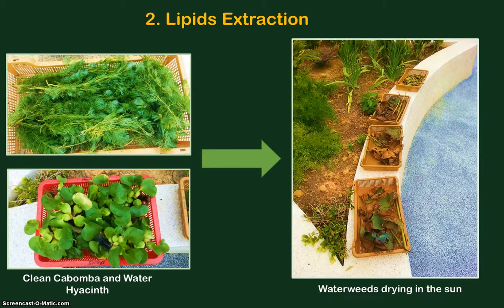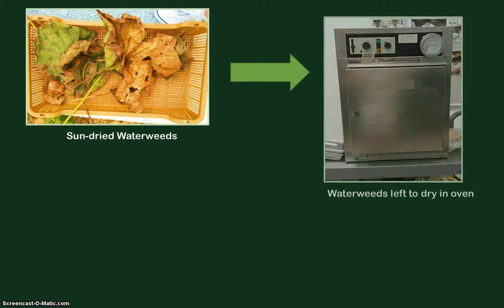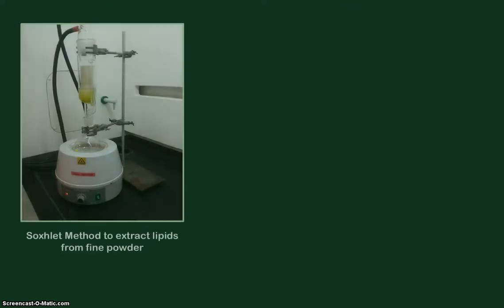The dried weeds are then placed in the oven at 80 degrees Celsius for one day. After that, we grind the dried water weeds into fine powder with an electrical grinder, then we use the Soxhlet method to extract lipids from the fine powder.